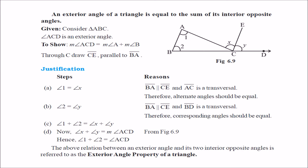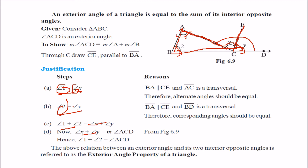In the second method, we draw a line CE from C which is parallel to AB. The exterior angle ACD is divided into two parts — call them 1 and 2. Since CE is parallel to AB and BC is a transversal, angle 1 equals angle x (alternate angles). Since CE is parallel to AB and AC is a transversal, angle 2 equals angle y (corresponding angles). Adding: 1 plus 2 equals x plus y. But x plus y is the full exterior angle ACD, and 1 plus 2 are the two interior opposite angles. This proves the exterior angle property of a triangle: the exterior angle equals the sum of the two interior opposite angles.